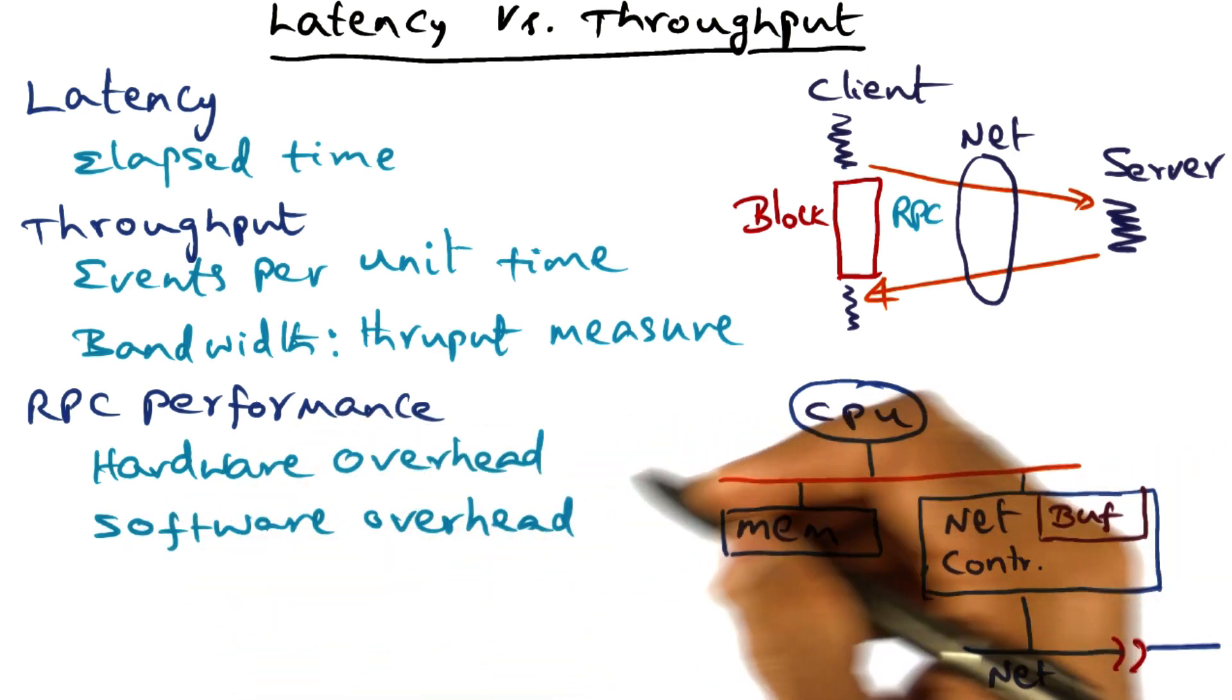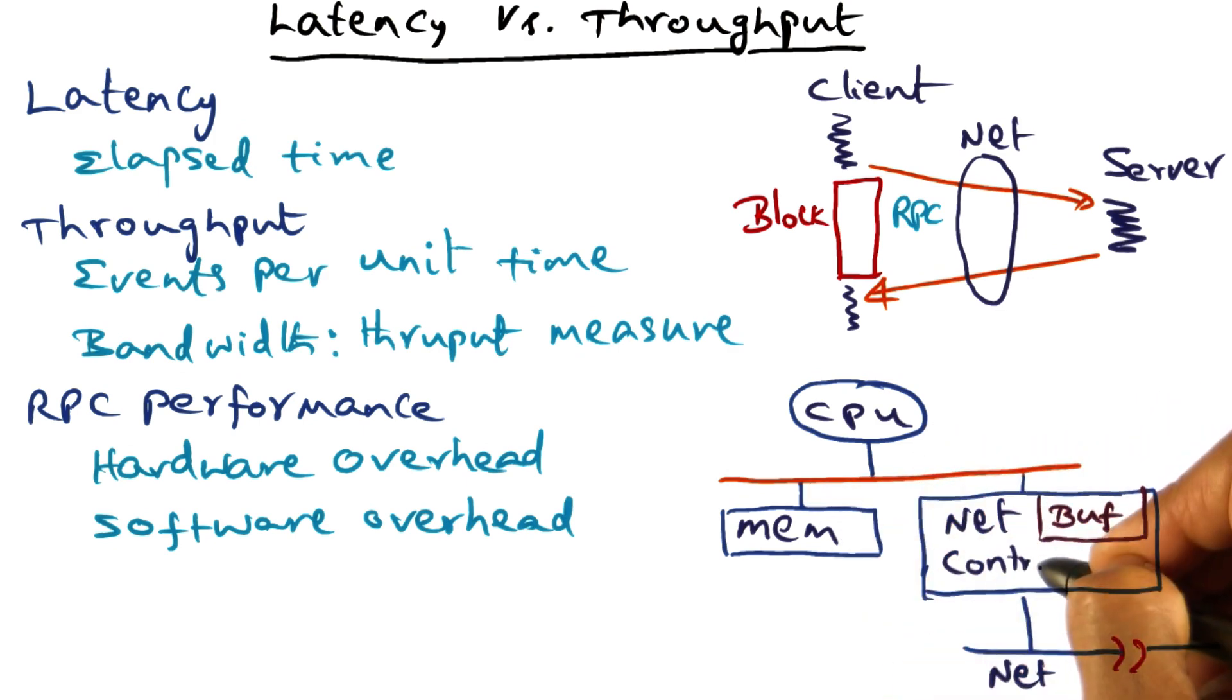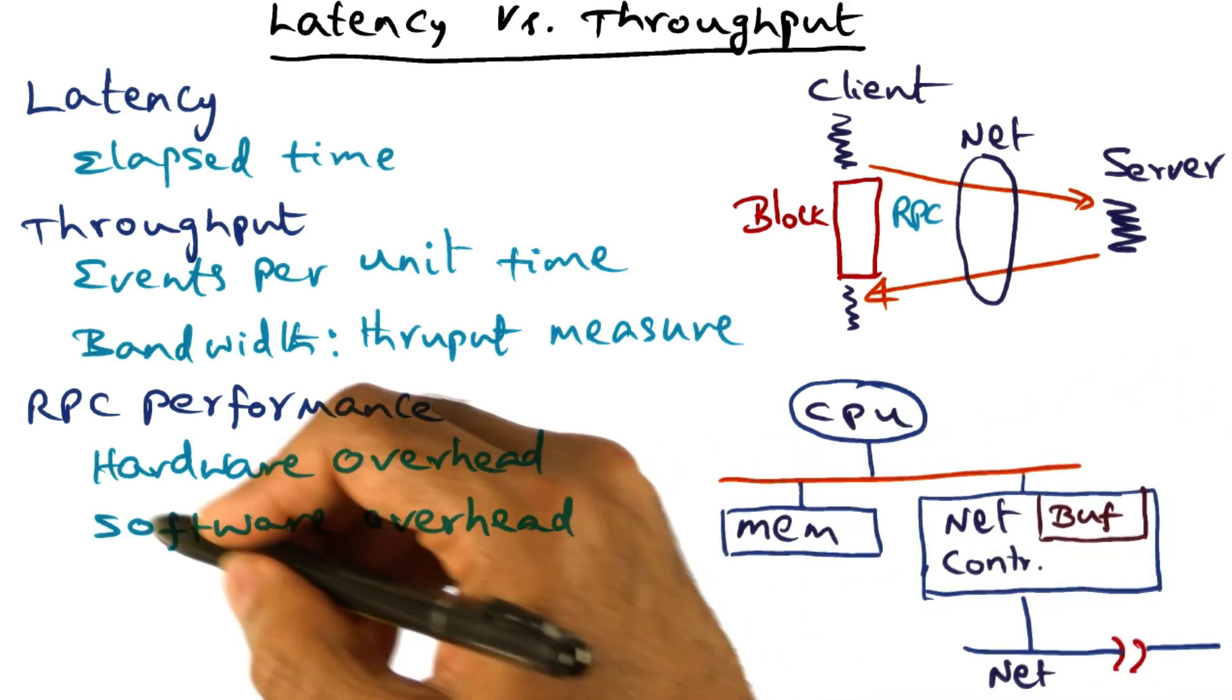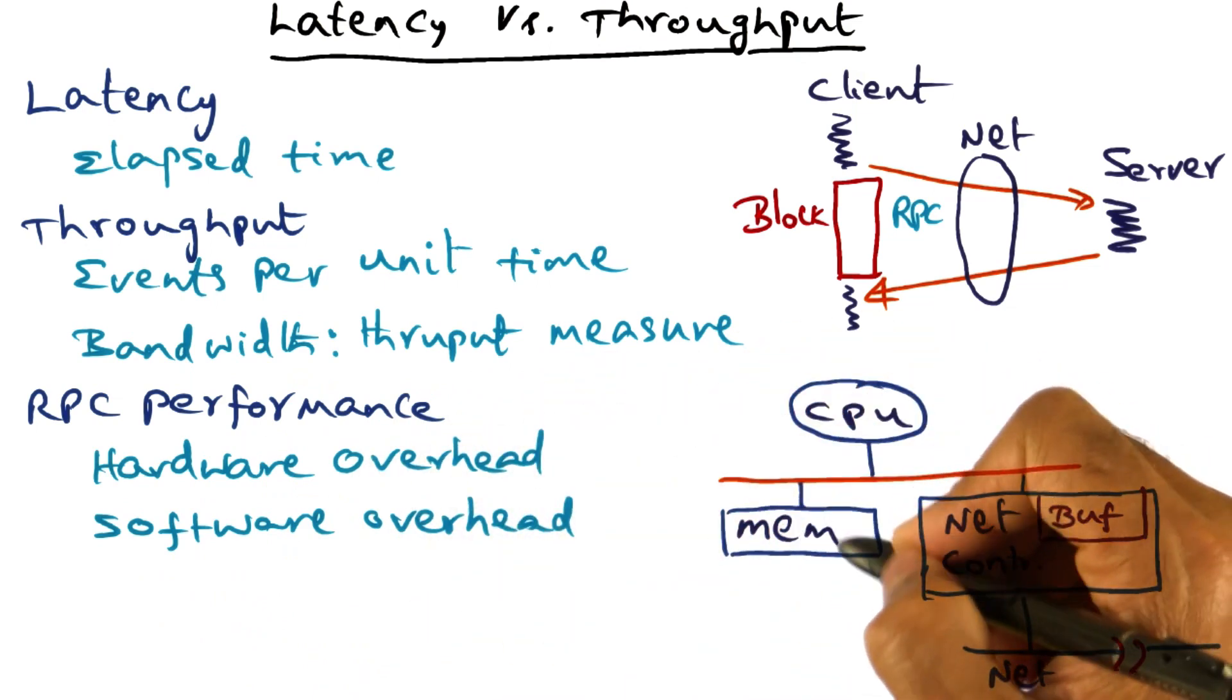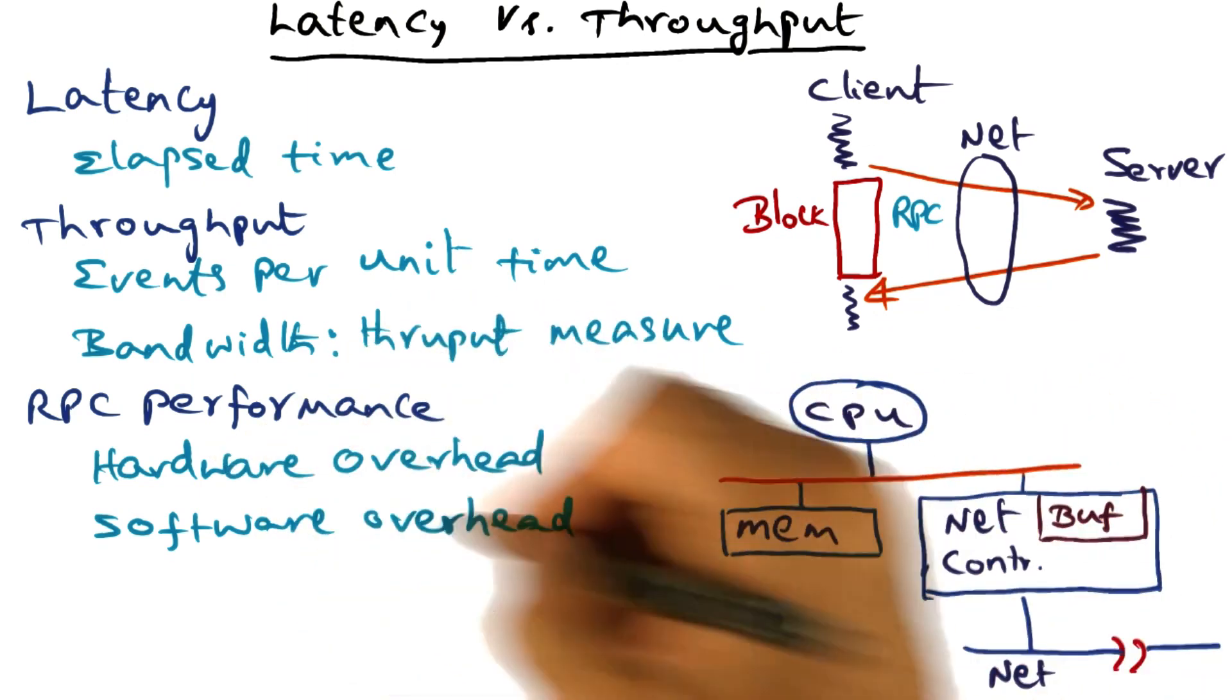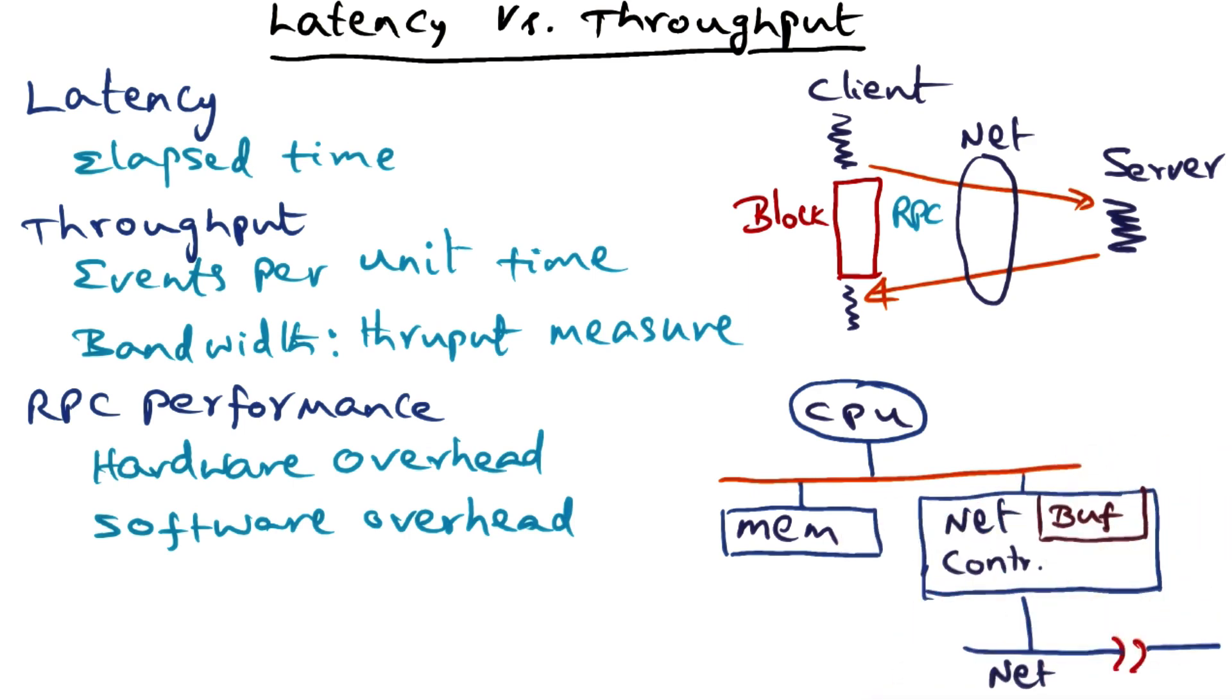The software overhead is what the operating system tacks on to the hardware overhead of moving the bits out onto the network. If you think about the latency as a whole for doing a network transmission, there is the software overhead incurred in the layers of the operating system to make the message available in the memory of the processor ready for transmission. Once it is ready for transmission, the hardware overhead kicks in, and the hardware, the network controller in particular, moves the bits from the memory into its buffer and then out on the wire.